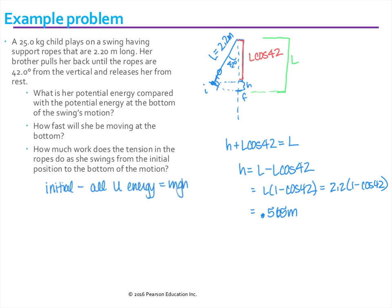And so the first question asks, how much is its potential energy compared to the bottom? So it would be MGH, which is 25 times 9.8 times 0.565. And that ends up to be 138.4 joules.